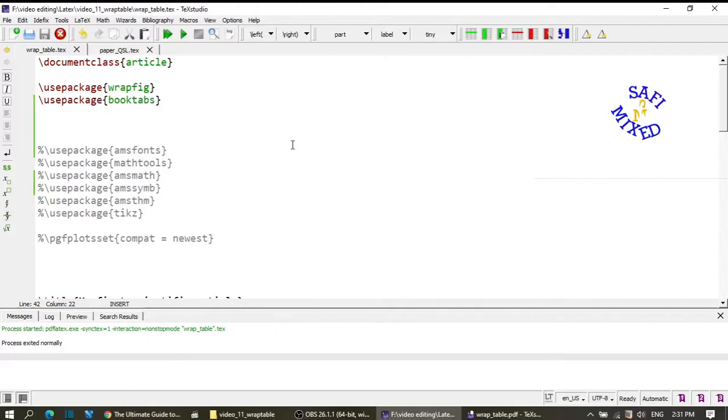For wrapping text around tables, one needs to add two packages to the preamble of the document: wrapfigure and booktab. Wrapfigure packages are used for wrapping text around figures and tables, and the booktab package enhances the quality of tables and provides extra commands.